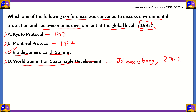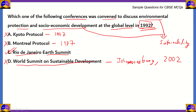If you look at the question, it says environmental protection and socio-economic development. Both of these terms coming together is what we refer to as sustainability. When we define sustainability, it is to protect our natural resources from getting degraded as well as to save them for future generations. The first summit for that was the Rio Summit, and the Rio Earth Summit was held in 1992. Therefore, option C is the correct option.